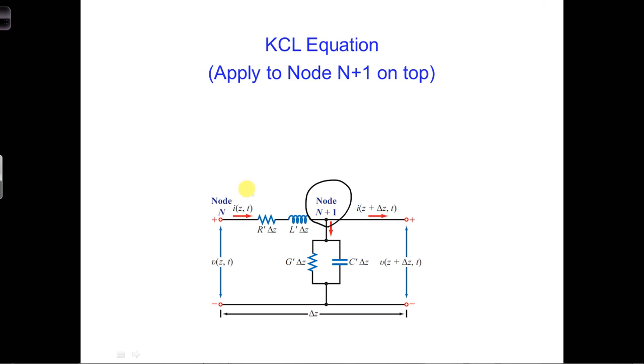We have the current I(z,t) - remember we're using capital I and V - flowing into that node. We have the current I(z + Δz, t) flowing out of the node.